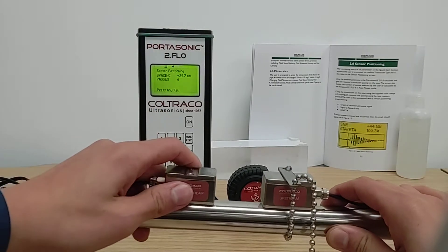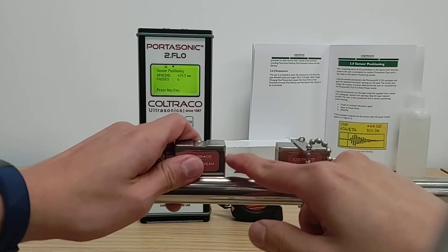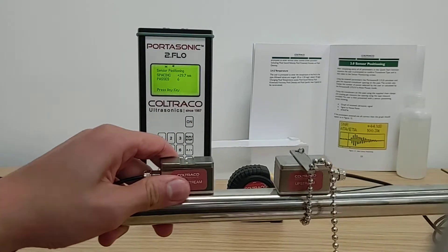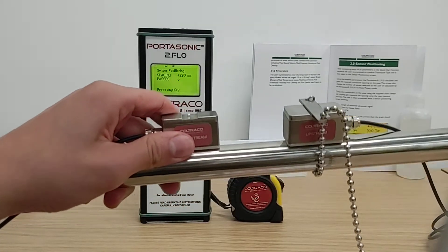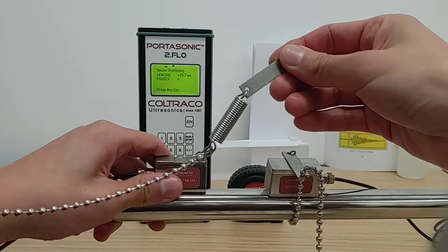Once you have measured the distance between the two front ends of the transducers, do the same by mounting the sensor onto your pipe using the beaded chain clamps provided.